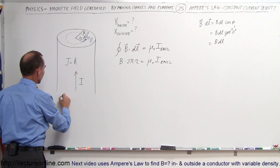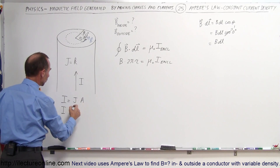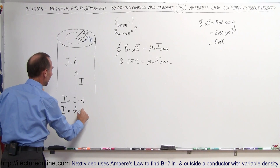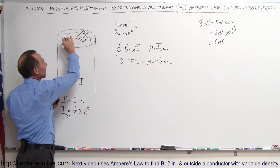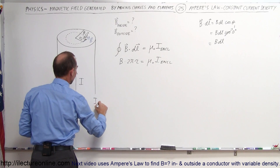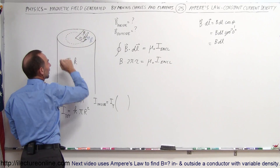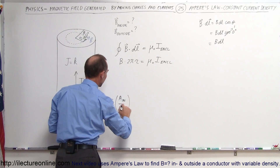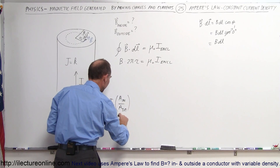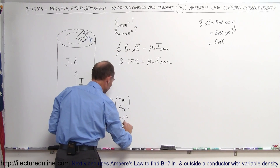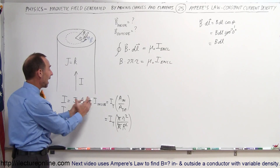The total current I is equal to the current density times the cross-sectional area. Since the current density is constant, I_total equals k times the area, which is π times R squared. The amount of current enclosed by the inner loop is I_inside equals I_total times the ratio of the small area to the total area. That gives us I_total times (πr²)/(πR²). The π cancels, leaving us with I_total times r² divided by R squared, which is I enclosed.